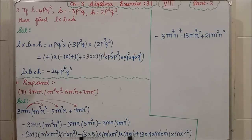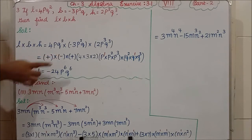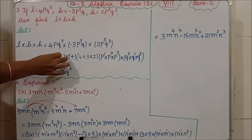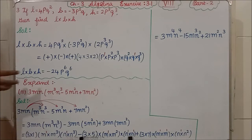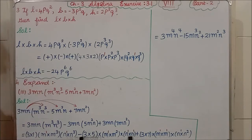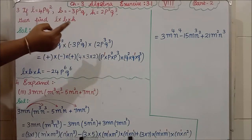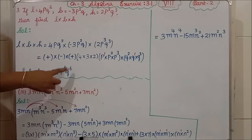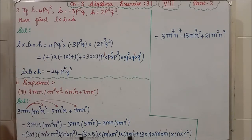Since you are a beginner, follow these steps so that even big terms are easy to solve. The sign is minus because of unlike signs. Numbers: 4 × 3 = 12, 12 × 2 = 24. For P: powers 1 + 2 + 3 = 6, so P⁶. For Q: powers 2 + 1 + 3 = 6, so Q⁶. The answer is −24P⁶Q⁶.